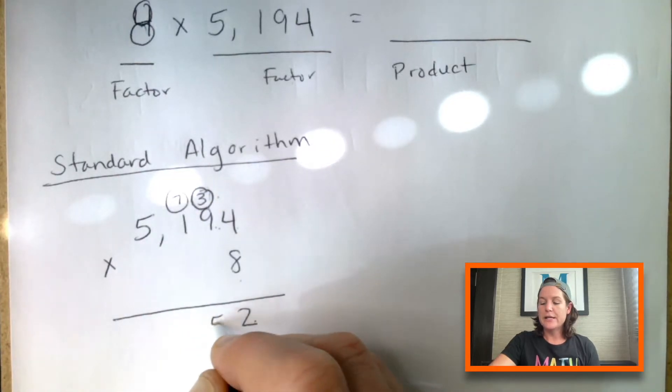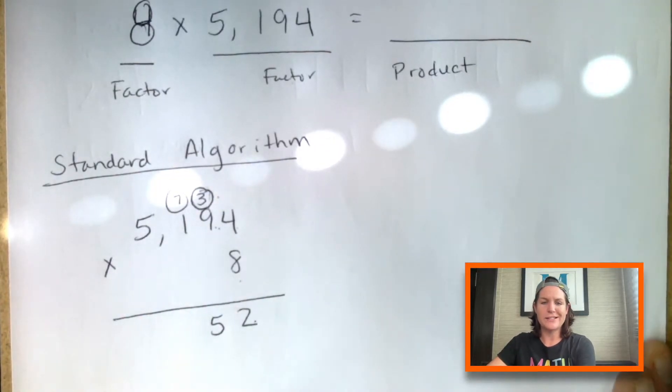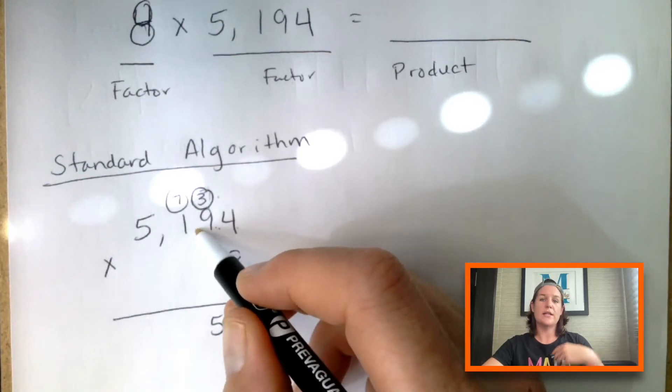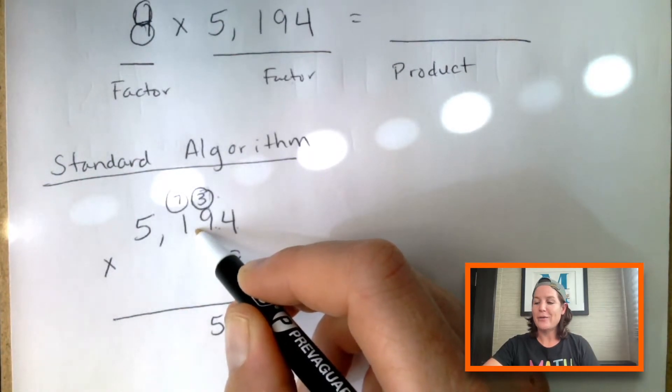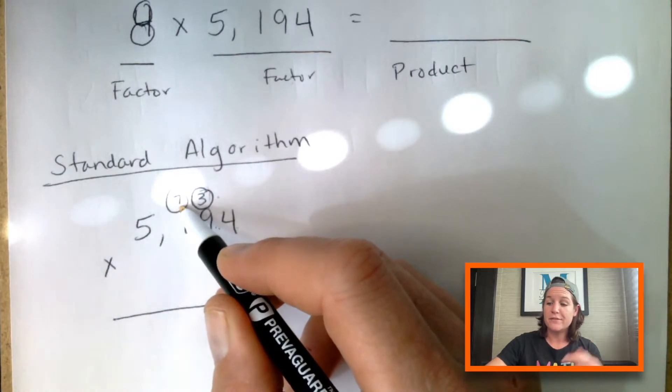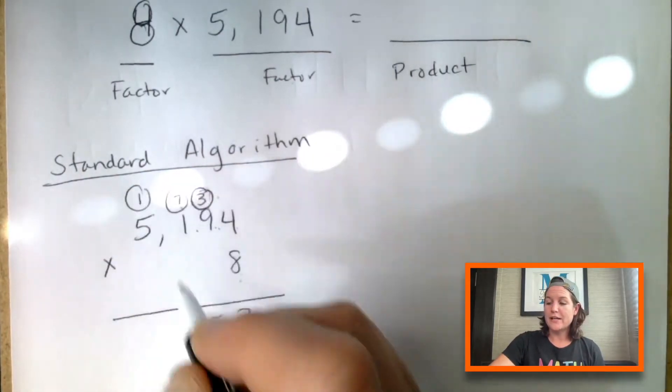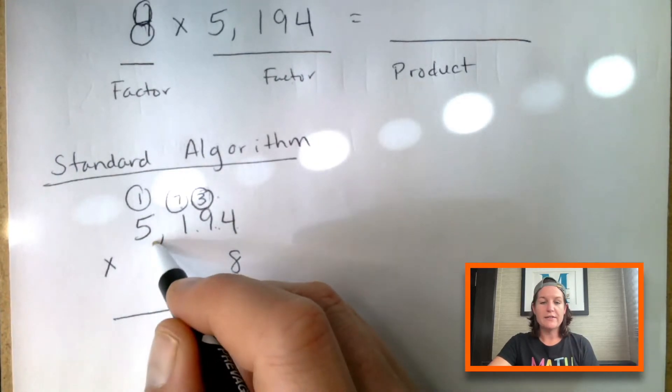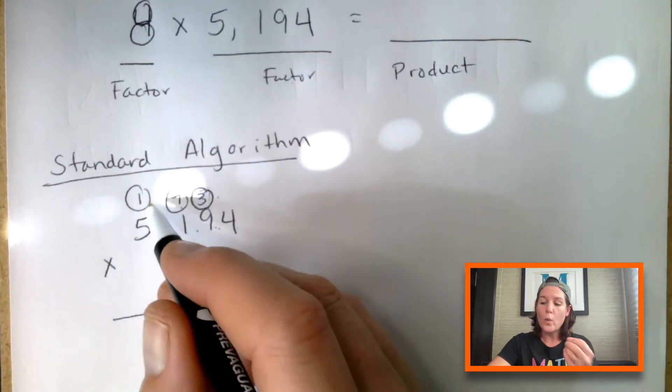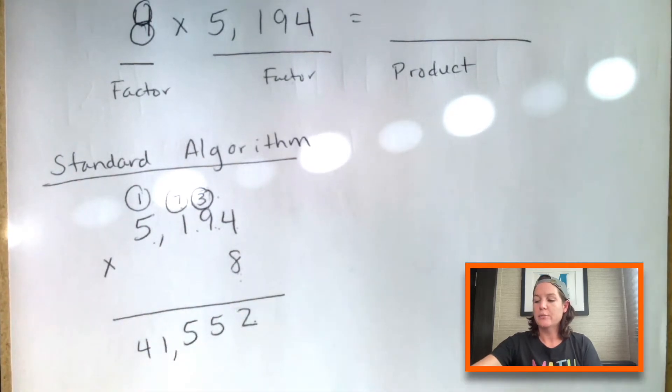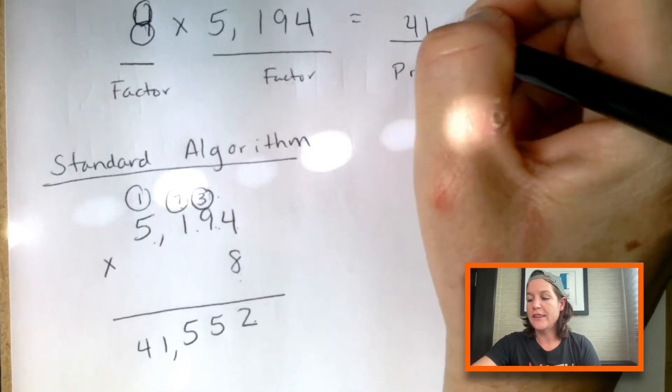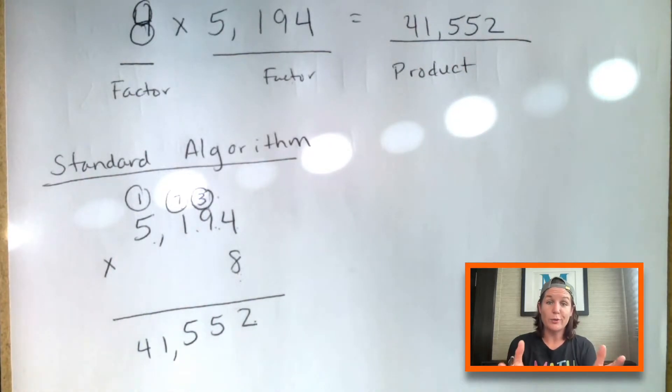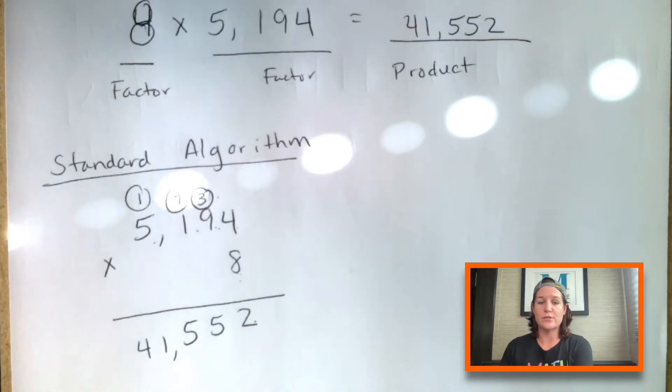Again, sorry with the glare. We've got 8 times 1 is 8. And now we add the 7, which would give us 15. Woo, it's high up here. Nice landing, dude. 8 times 5 is 40 plus 1 is 41. So our correct product would be 41,552. Probably the way that you learned how to do it. Something similar to that in school.